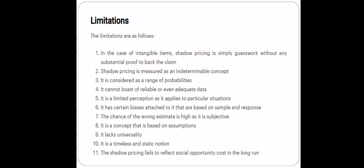What are the limitations? It is simply guesswork — it can be wrong. It is an approximate work based upon probability, so it is not reliable data. It is a limited perception because we are considering only a particular situation. It has certain biases — sample and response biases. The chance of a wrong estimate is high, as it is based upon assumptions. It lacks generality and is very specific in nature. There are many other scenarios which have to be looked upon. It is a static notion — not a dynamic one. The shadow pricing also fails to reflect social opportunity cost in the long run.